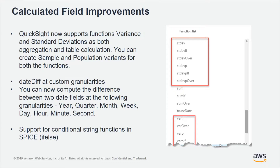Starting with the brand new functions — variance and standard deviation are the theme here, and there are lots of different iterations. There's standard deviation, standard deviation if (which allows conditional standard deviation aggregations), and standard deviation over, which is a table calculation computed across many data points in a visual. Those same six functions also exist for variance, available as pure aggregations as well as table calculations.